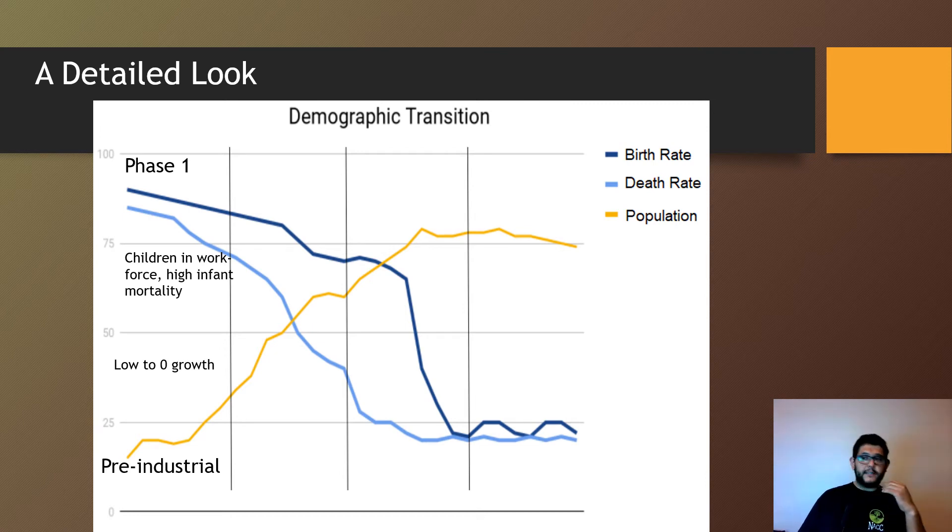In stage one, there tend to be a lot of children in the workforce, infant mortality is very high, and there's very little growth. This is called the pre-industrial phase. Currently in the world, there are no countries in the pre-industrial phase—we've all moved beyond that.